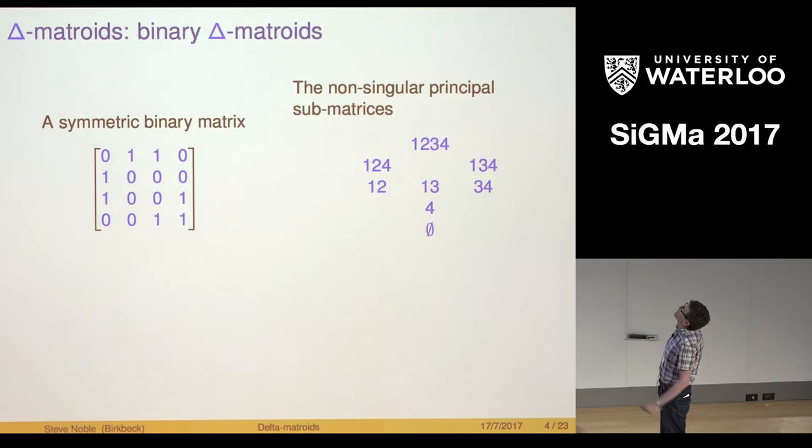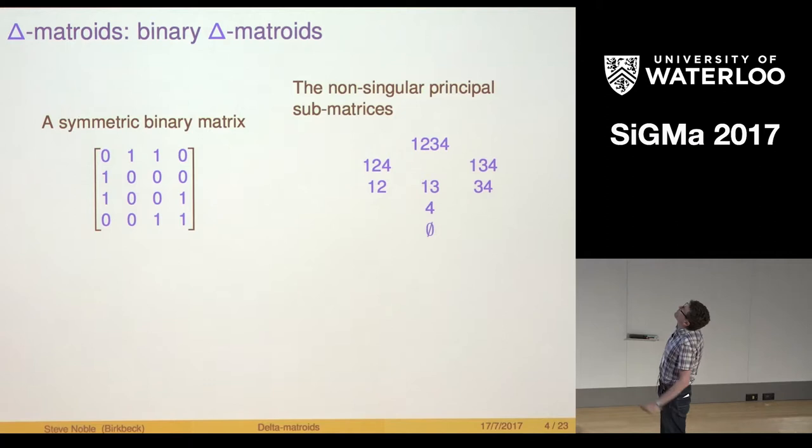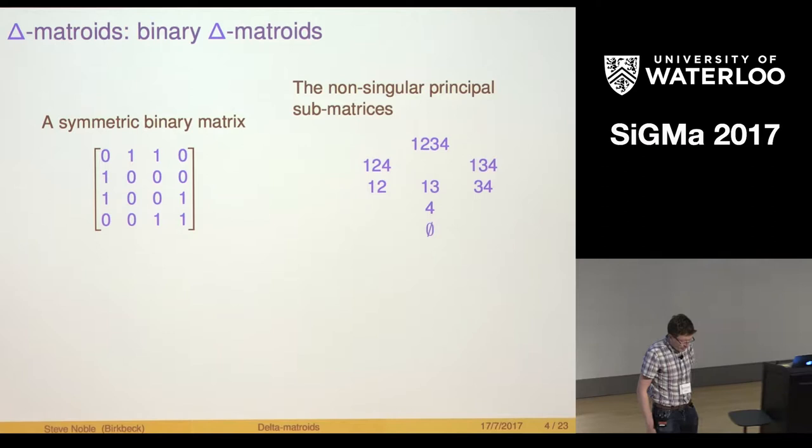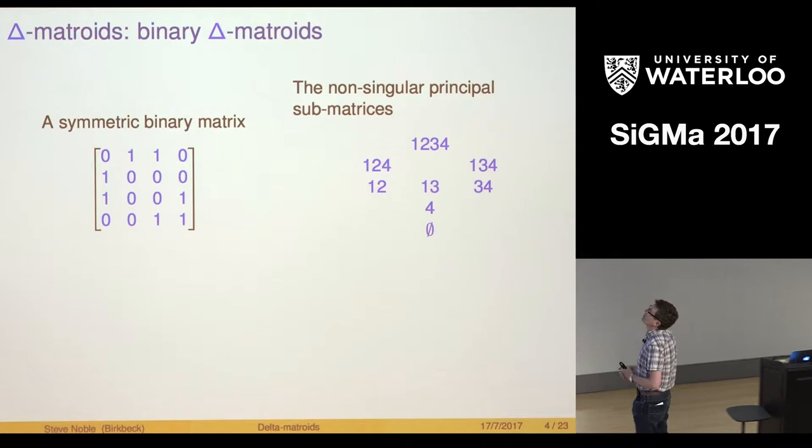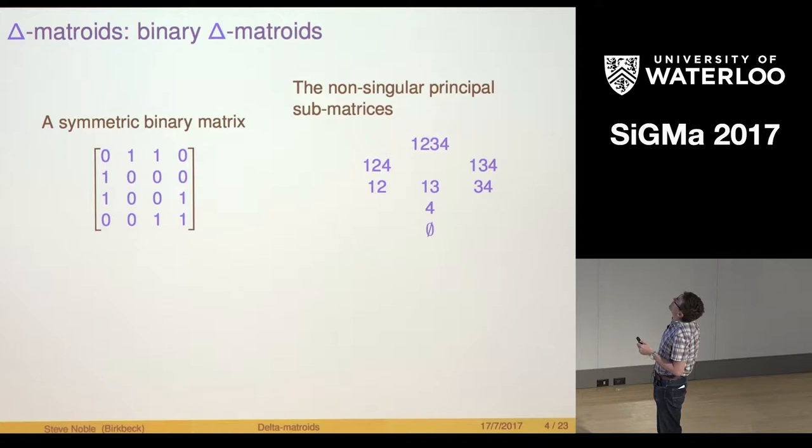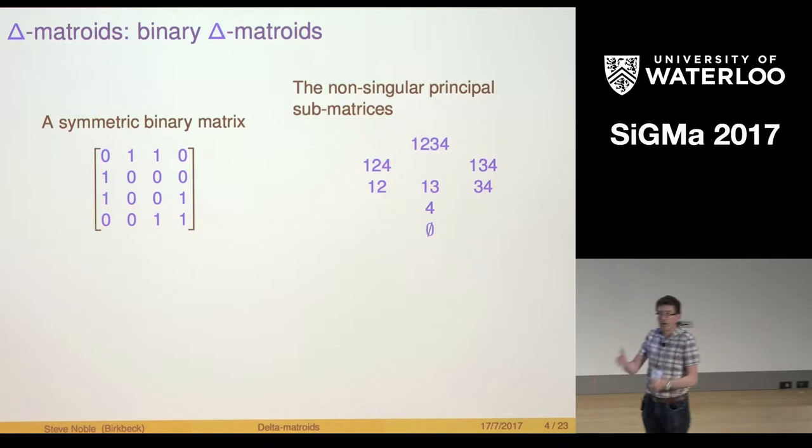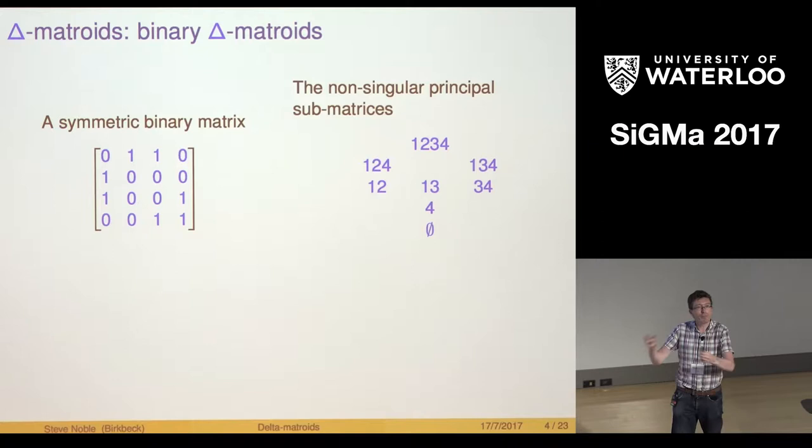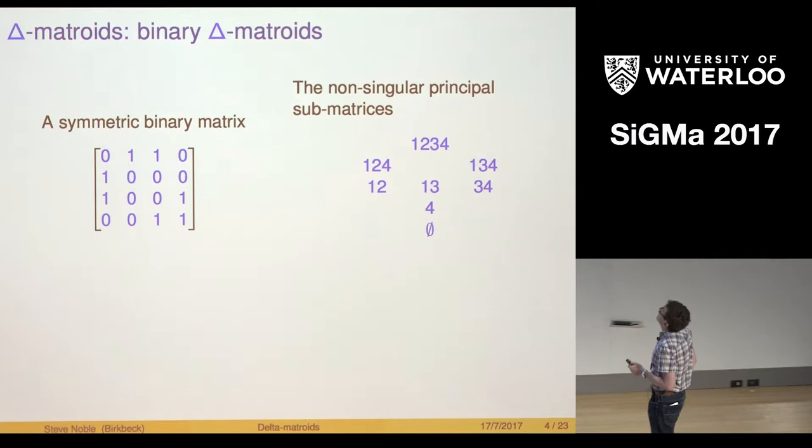What I want to do is look at some classes of Delta Matroids. The first one I'll start with is these Delta Matroids that you get from symmetric binary matrices. We have a symmetric binary matrix up there and I'm going to get a collection of feasible sets from it by taking non-singular principal sub matrices. A principal sub matrix I get by selecting a subset of the labels of the rows and columns, the same subset of rows and columns, and look at where they intersect in the matrix.